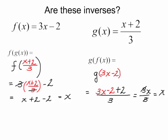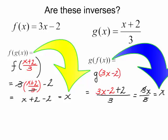So we did have f of g of x, it was equal to x. And we found that g of f of x was also equal to x. So these two functions are inverses.